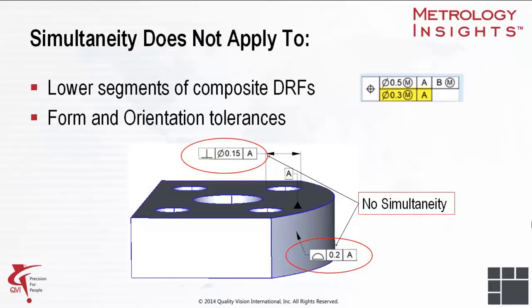Simultaneity does not apply in the following two cases. The first case refers to the lower segments of feature control frames. If we have several FCFs with identical tolerance types, datums, and datum modifiers, then simultaneity applies only to the uppermost segment, which can control location and orientation. The lower segments of a feature control frame control orientation only and simultaneity does not apply to them by default.